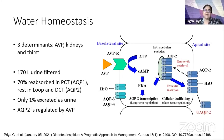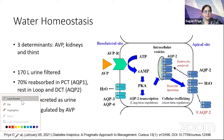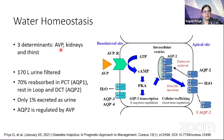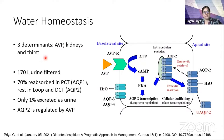Diabetes insipidus, simply put, is a disorder of water homeostasis. The three main determinants are the secretion of arginine vasopressin from the hypothalamus and posterior pituitary, its action at the level of the renal tubule, and thirst regulation.